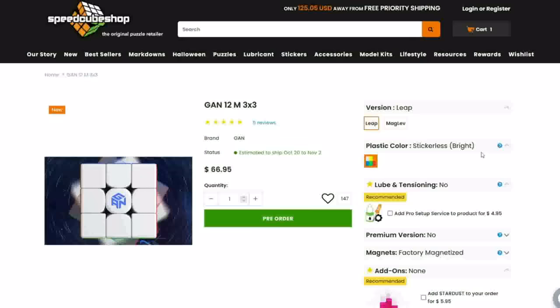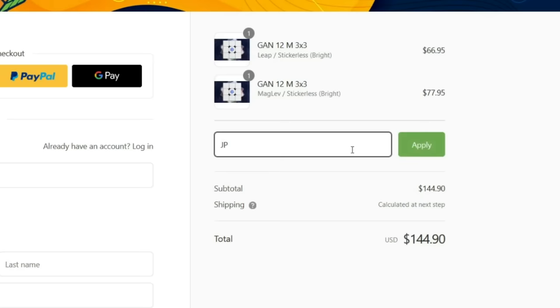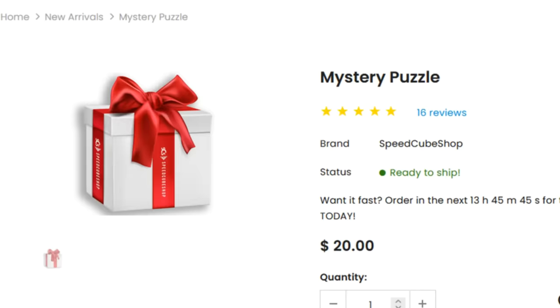If you want to buy this, you can go to speedcubeshop.com and choose between the leap and the maglev version, and make sure you use the discount code jperm.